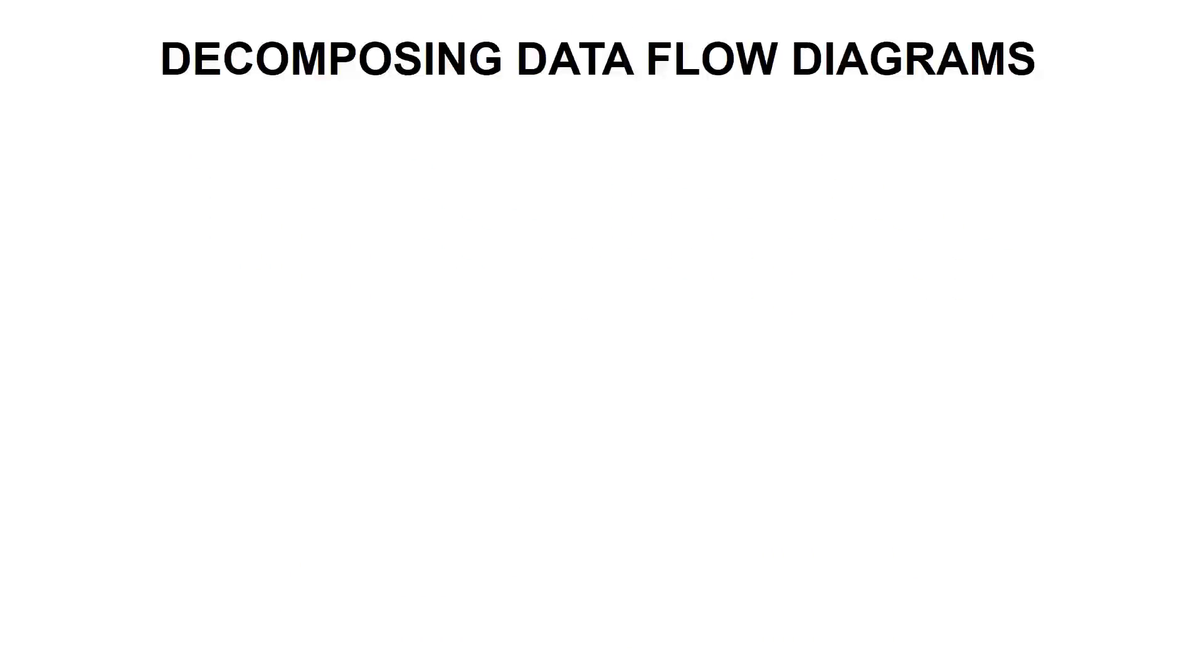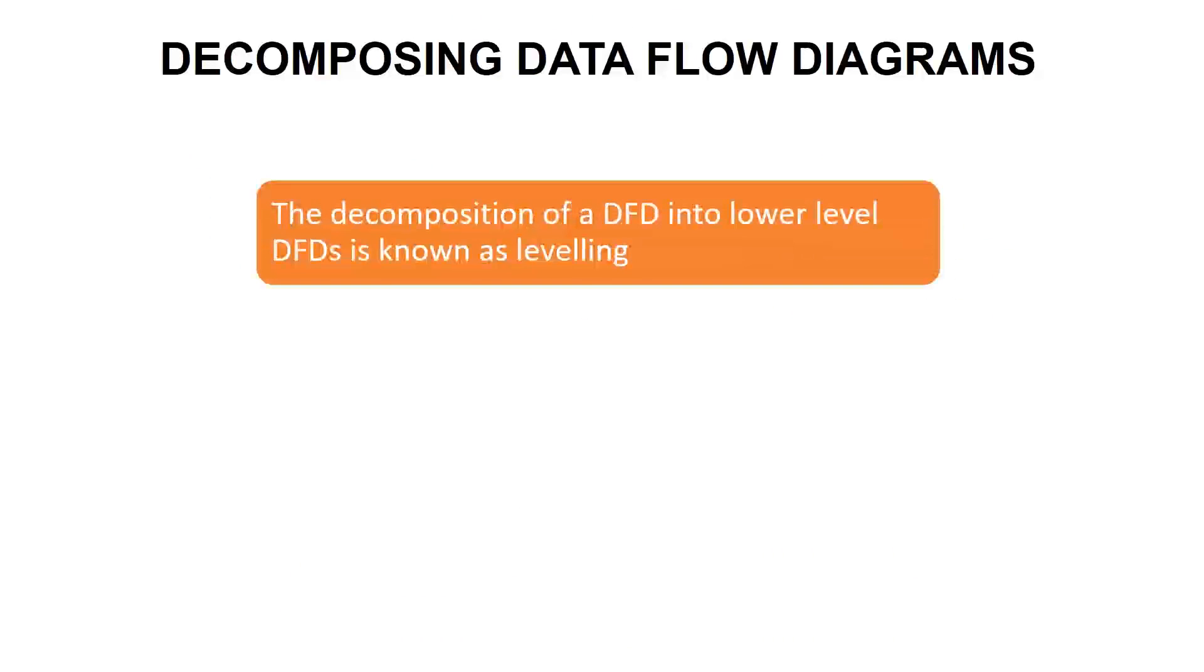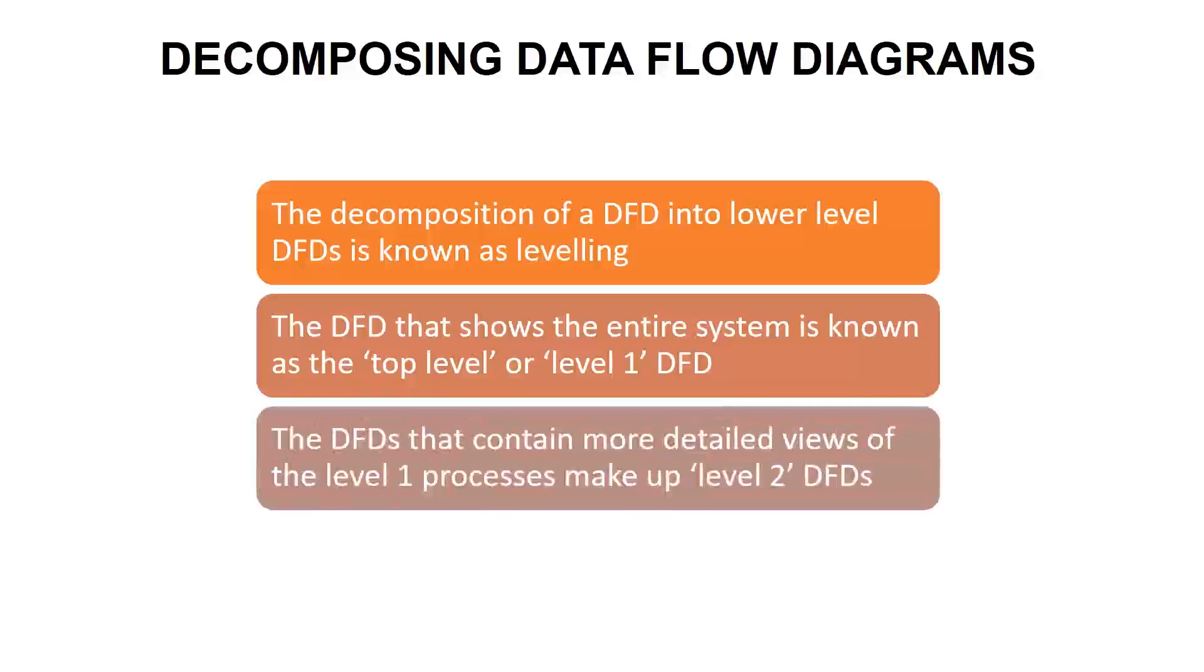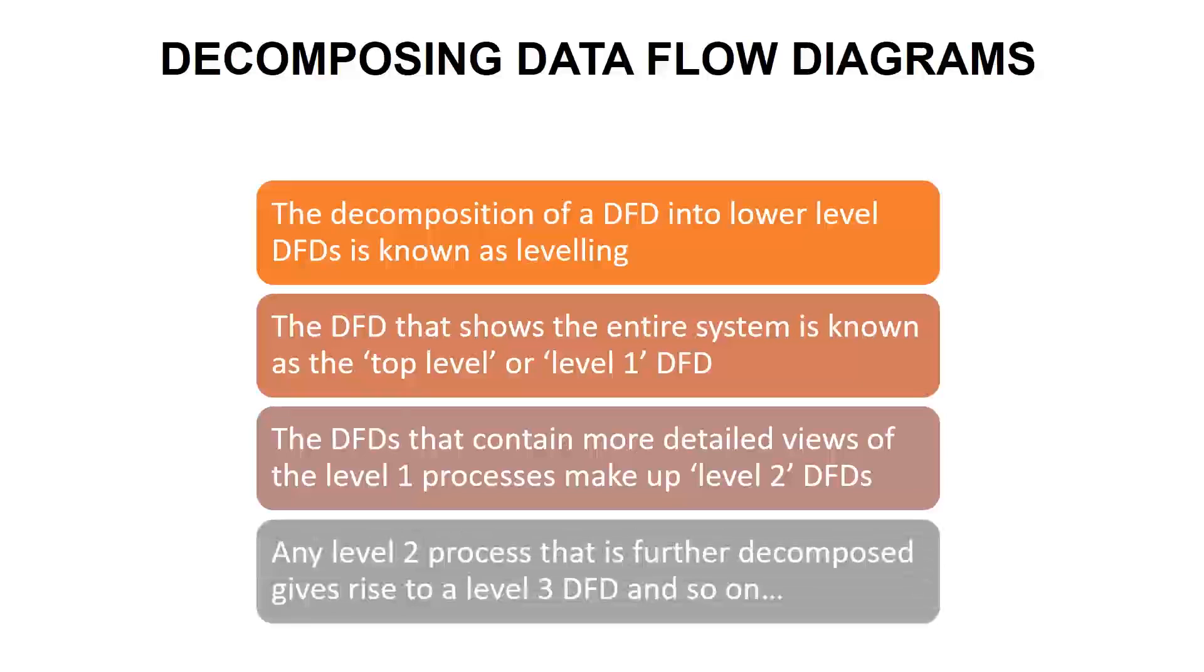A data flow diagram can dive into progressively more details by using levels and layers, zeroing in on a particular piece. DFD levels are numbered 0, 1, or 2, and occasionally go to even level 3 or beyond. The necessary level of detail depends on the scope of what you are trying to accomplish.